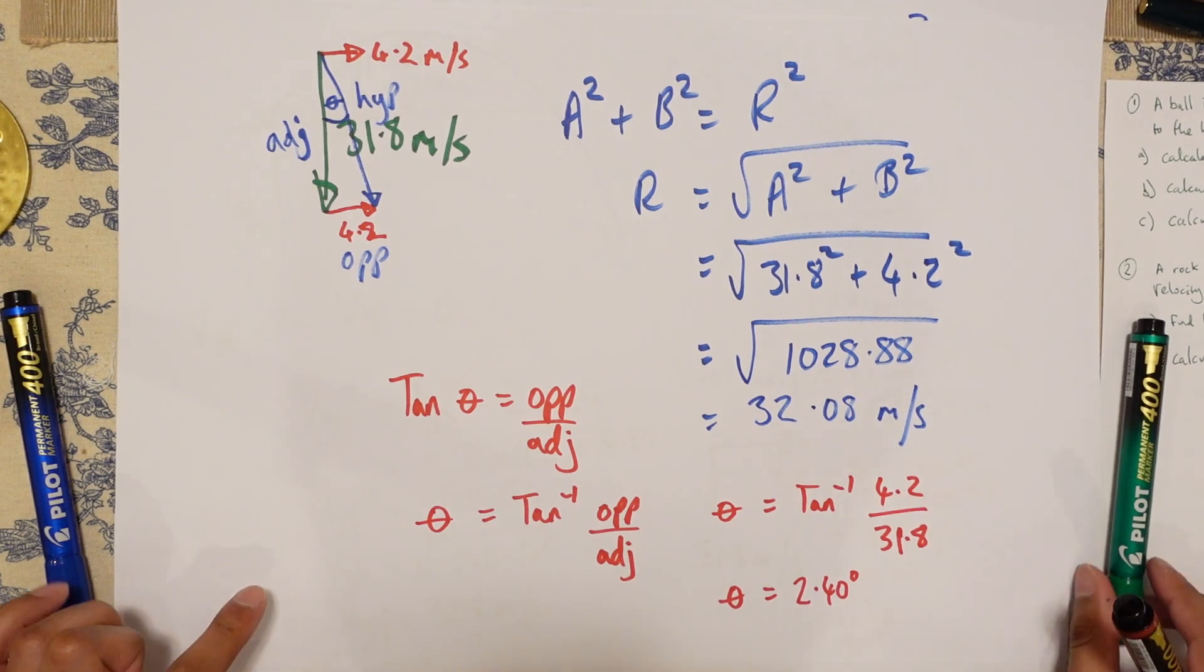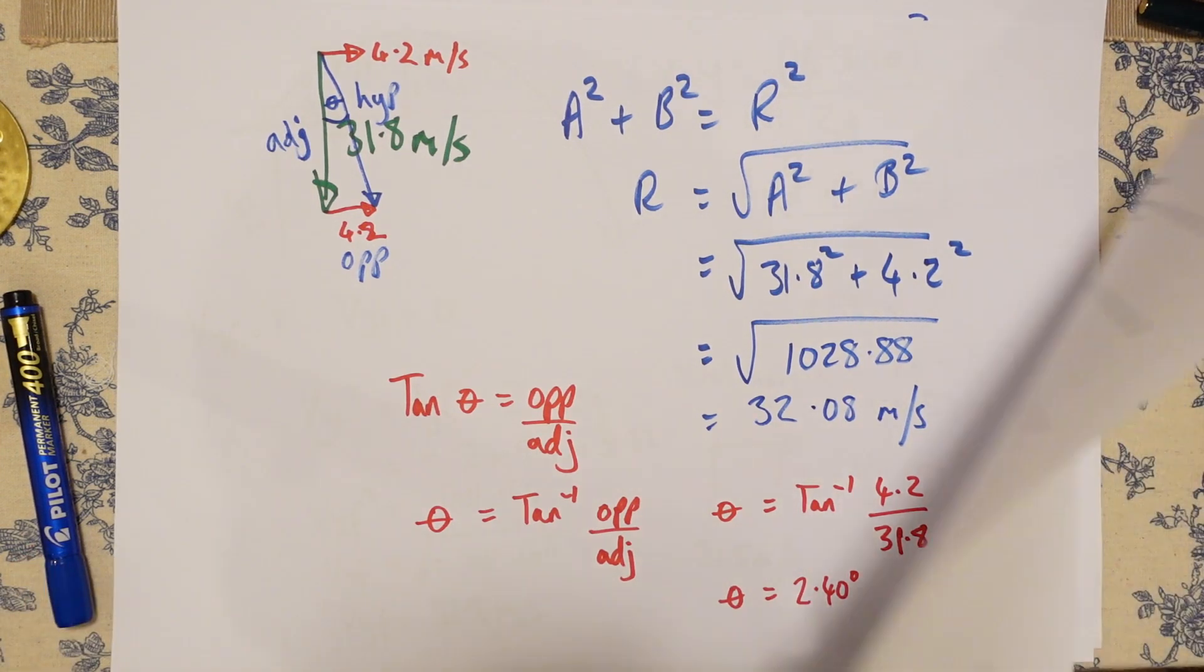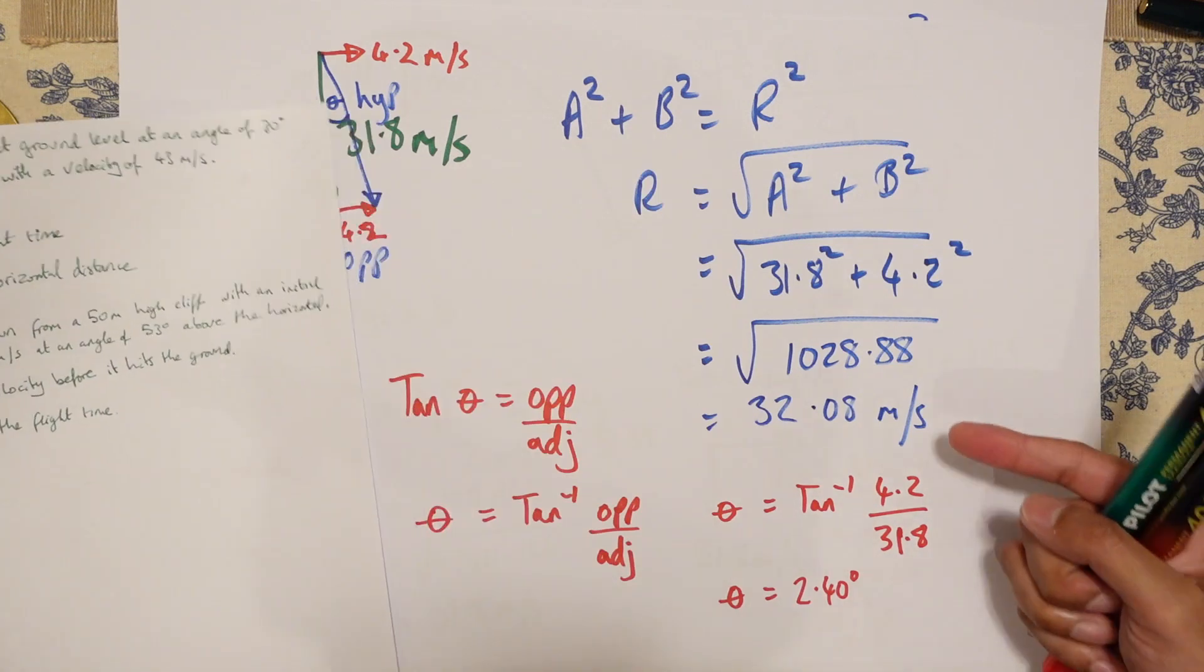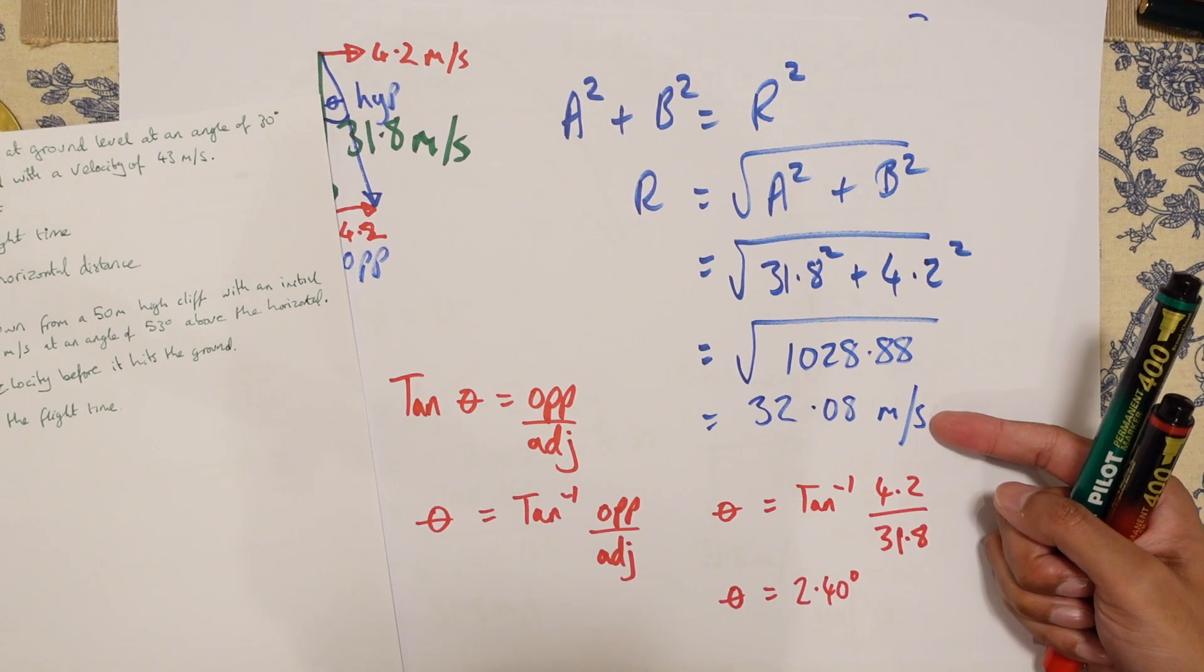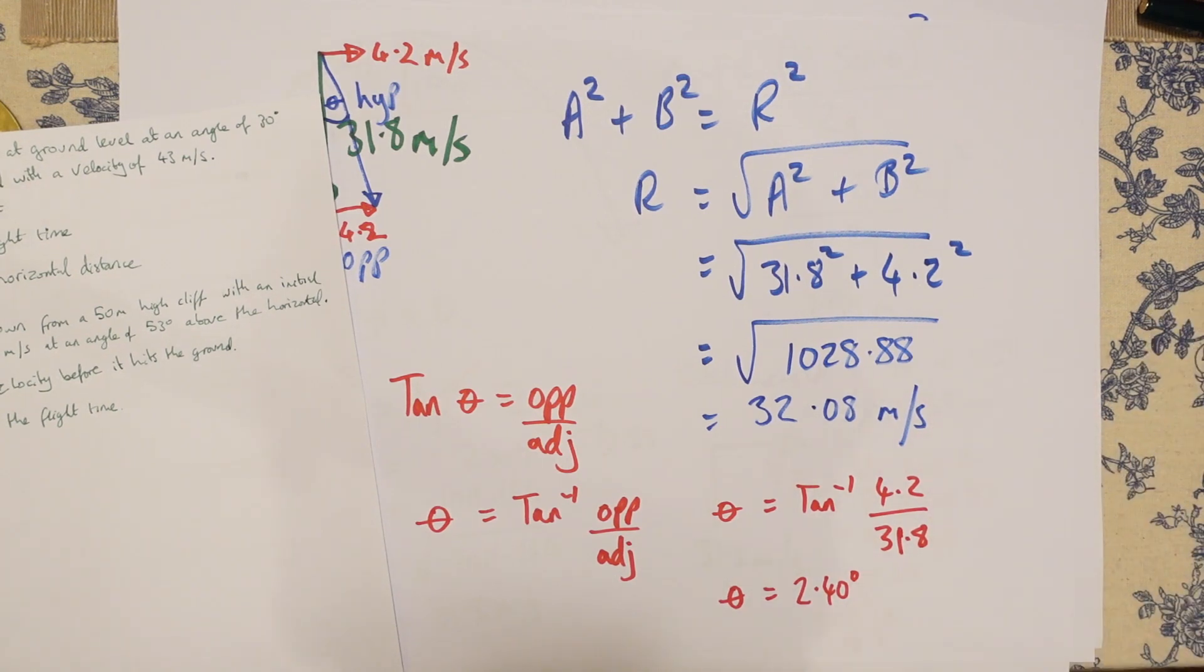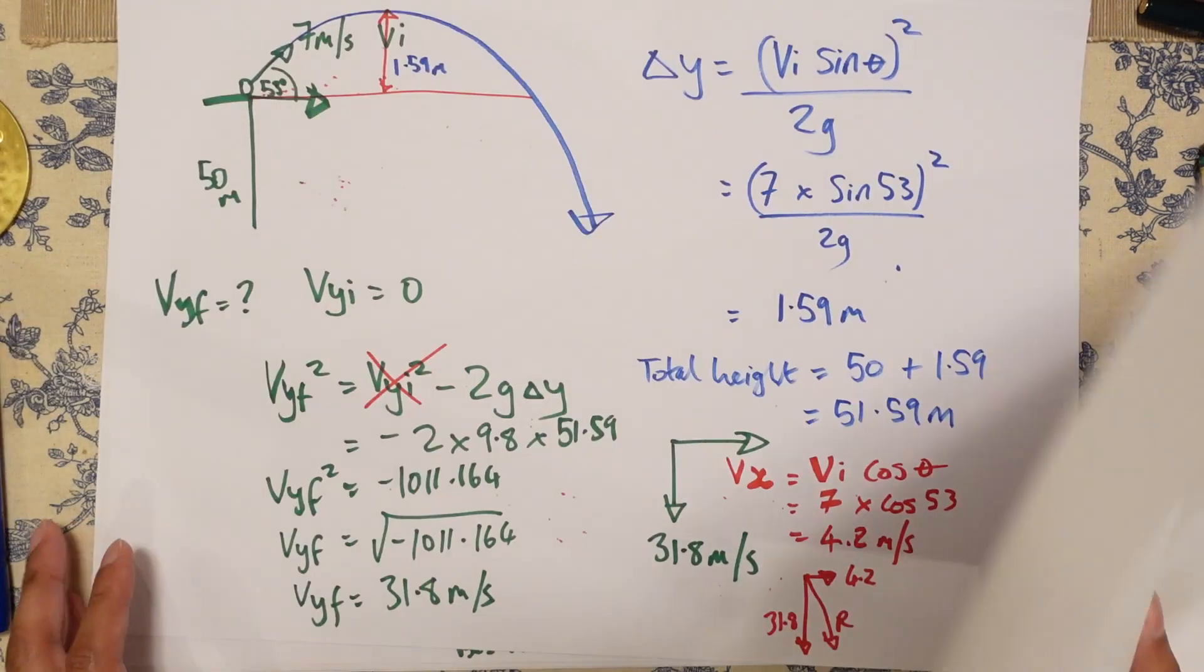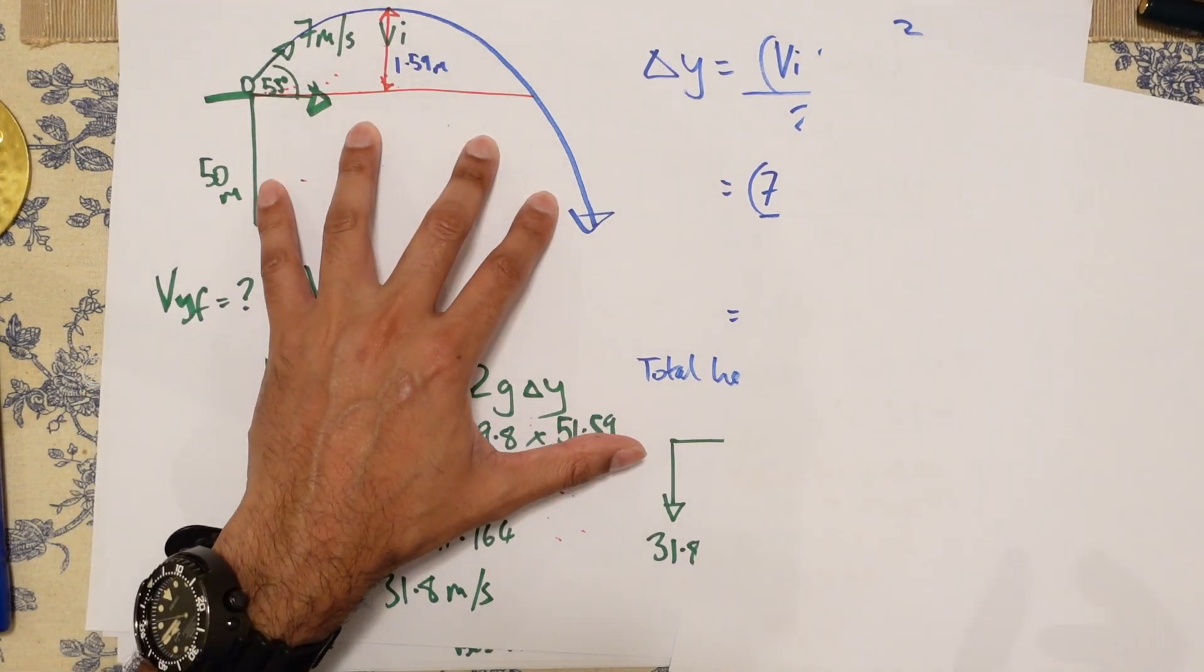And there we are. So that's the first bit of the question. We have figured out the final velocity just before it hits the ground. And now all we've got to do is work out the flight time.